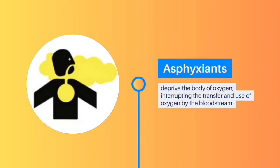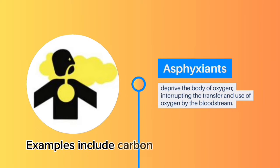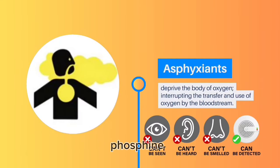Asphyxiants: Chemical asphyxiants deprive the body of oxygen, interrupting the transfer and use of oxygen by the bloodstream. Examples include carbon monoxide, cyanide, and phosphine.